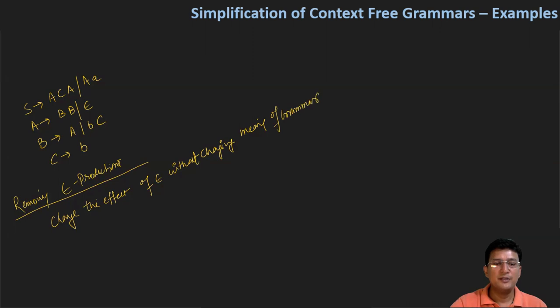The meaning of the grammar should not change while changing things. Now, first we have only A's epsilon production shown here, A produces epsilon. Then we have productions where S produces ACA, so we write S produces A from ACA. Where we have epsilon, we remove the epsilon production here.